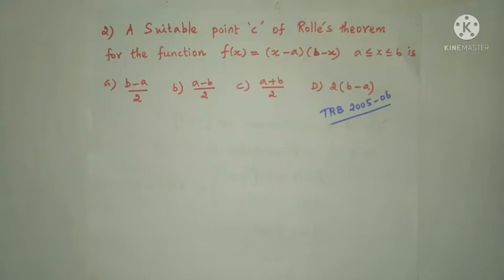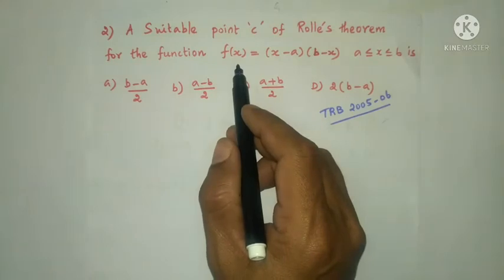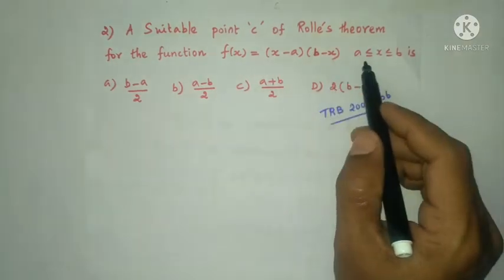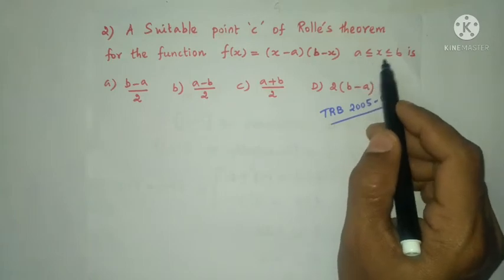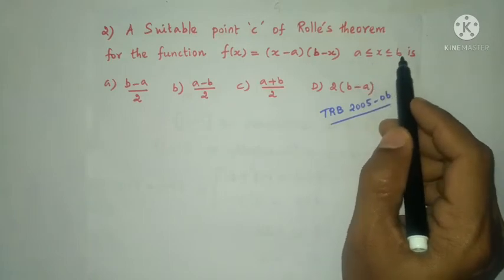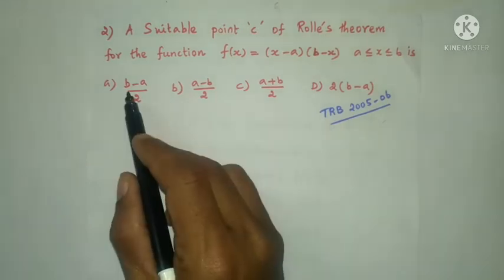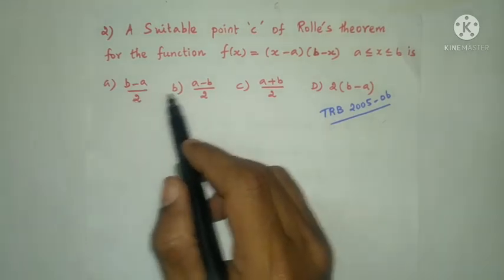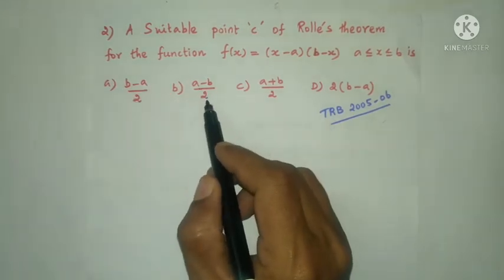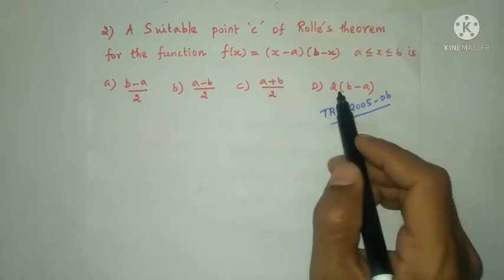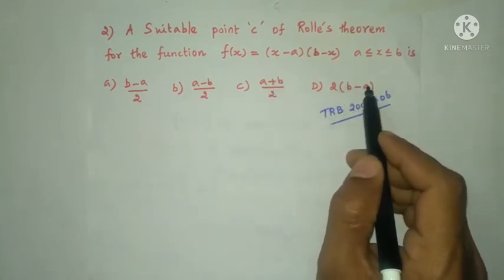Next question: a suitable point c of Rolle's theorem for the function f(x) = (x − a)(b − x) where a ≤ x ≤ b is? Options: option A is (b − a)/2, option B is (a − b)/2, option C is (a + b)/2, option D is 2(b − a).